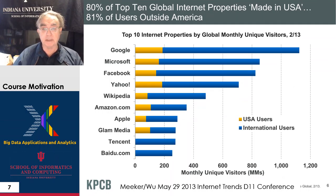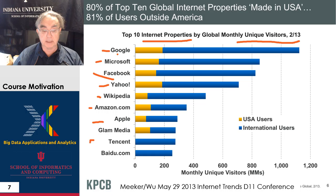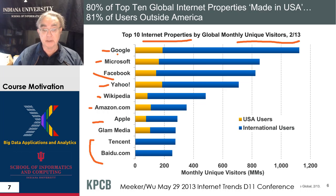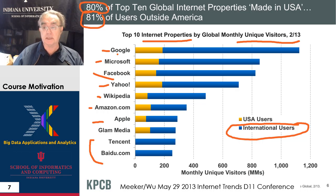Here we have a comparison of Internet sites by visitors. We can see it's dominated by standard companies: Google, Microsoft, Facebook, Yahoo, Wikipedia, Amazon, Apple. And here we have some important Chinese sites — Tencent and Baidu. The interesting feature is that the blue represents international users, showing the dominance of Chinese sites. But even if you look at US sites, they're largely international users. This is a remarkable statistic: 81% of users are outside the USA, but 80% of the sites are inside the USA. It shows that as the USA remakes this industry, it's exporting Internet sites in a rather dramatic fashion.